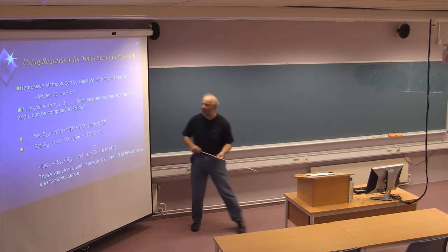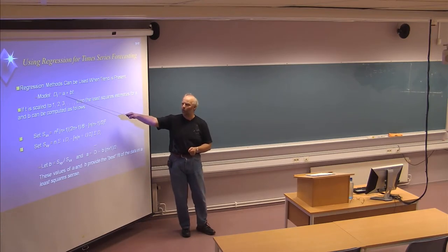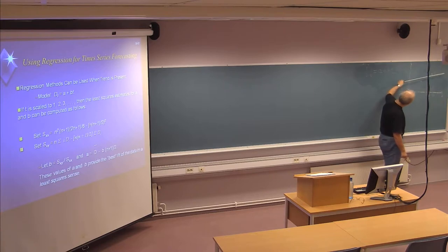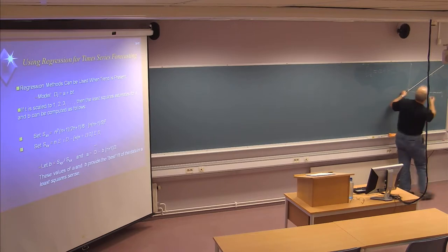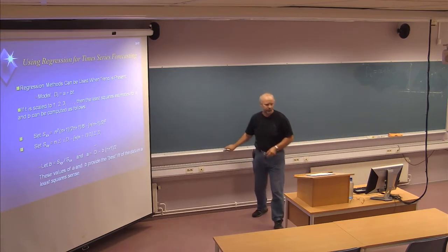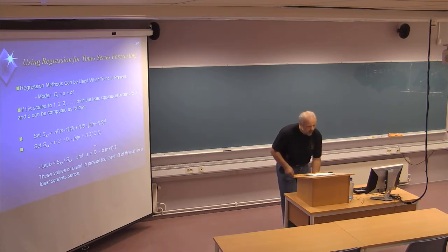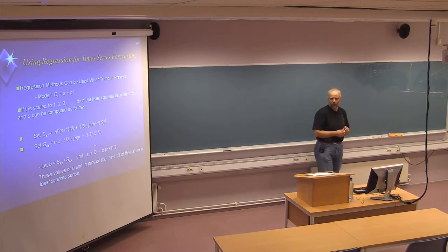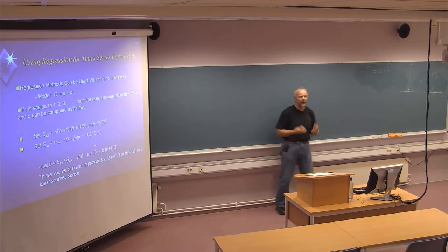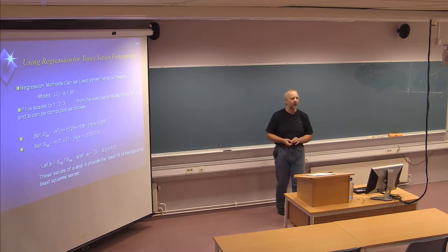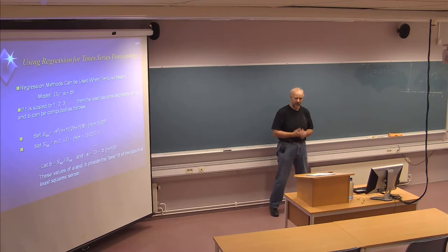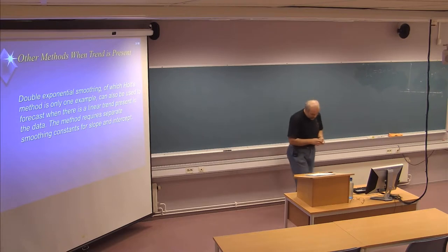This is how regression analysis identifies a formula for the best-fit line to the measured data points, which can then be used to forecast coming periods. This was as far as we came last week. Now I will show another method that can be used when you have a trend in the dataset — double exponential smoothing, also called the Holt method.